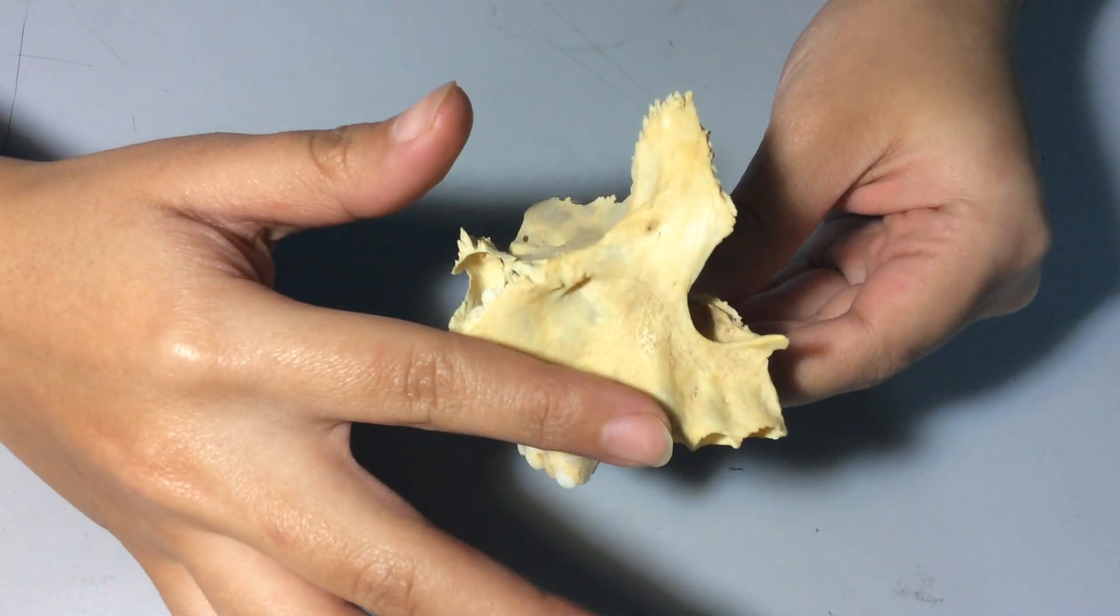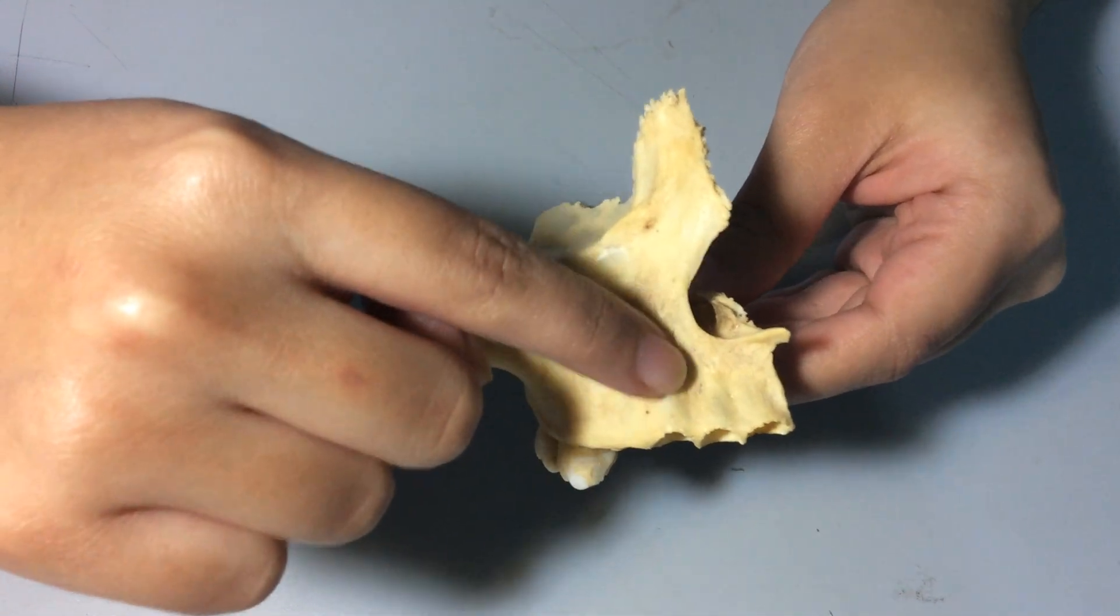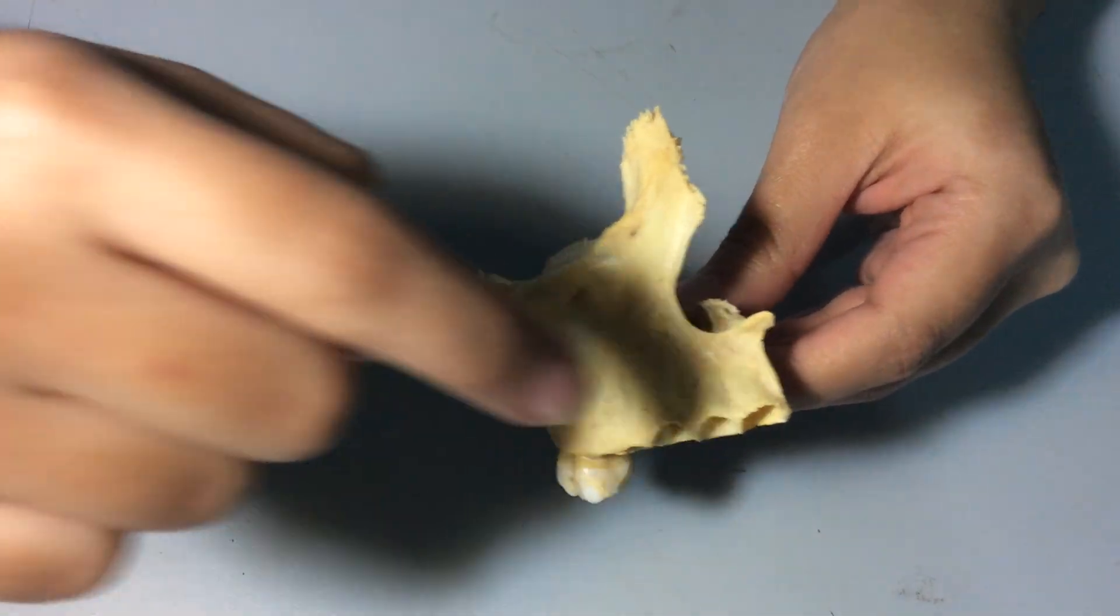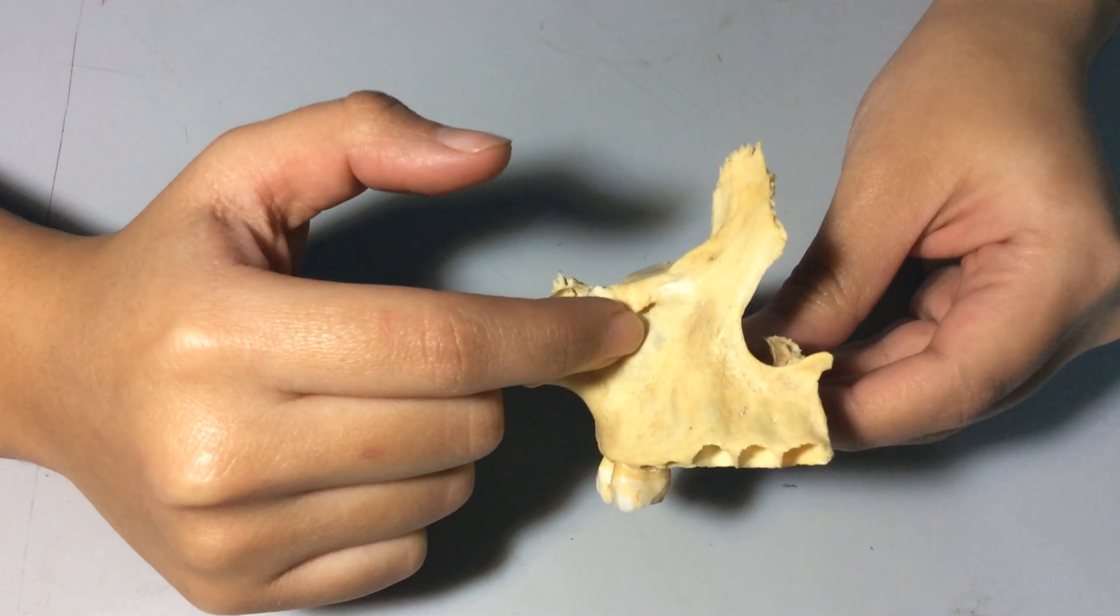On the anterior surface, we have incisive fossa, canine eminence, canine fossa, and infraorbital foramen which transmits infraorbital nerve and vessels.